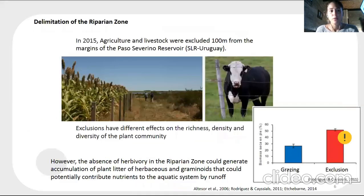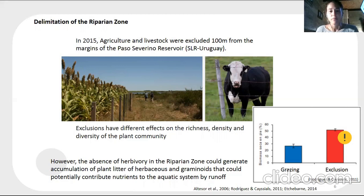The delimitation of the riparian zone was implemented in 2015, consisting of the exclusion of agriculture and livestock within 100 meters from the margin of water bodies. Discussions have noted different effects on the richness, density, and diversity of the plant community. It is also known that the absence of herbivory in the riparian zone could generate an accumulation of grasses and litter that could potentially contribute nutrients to the aquatic system via runoff.